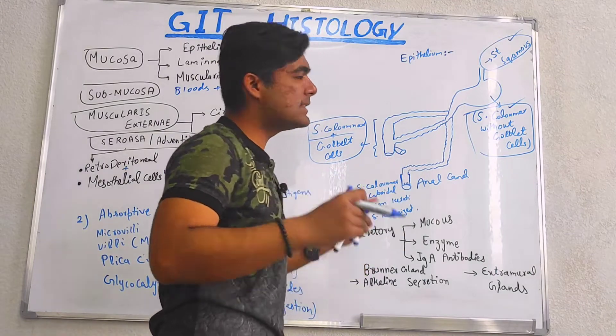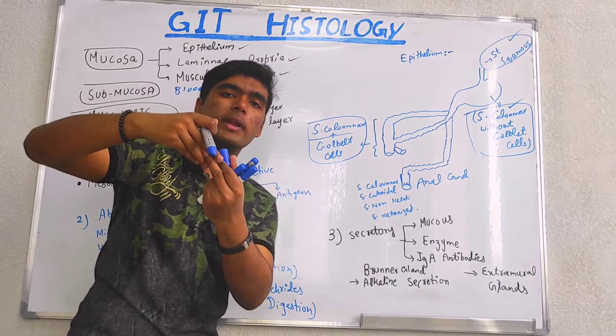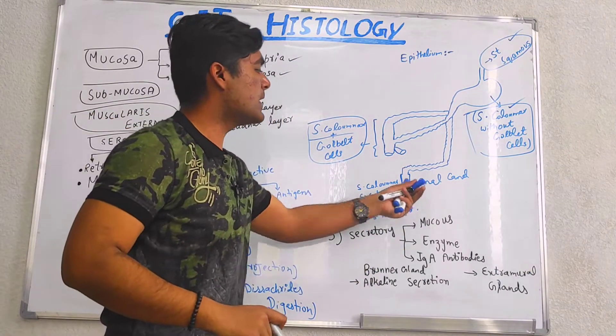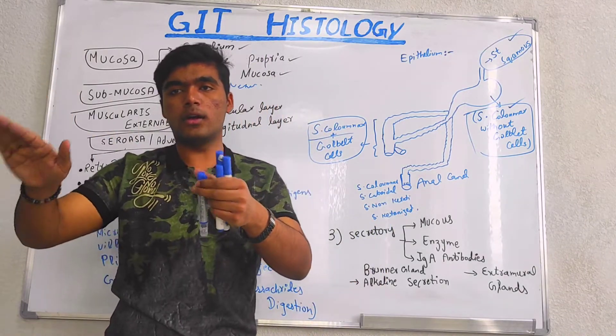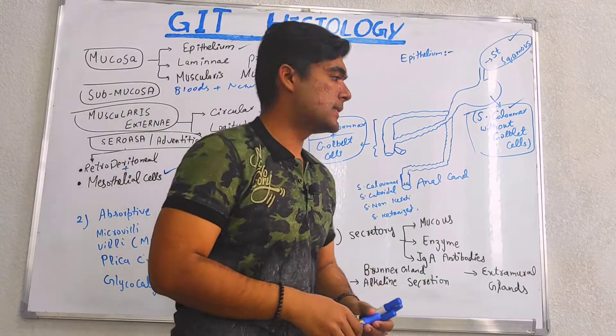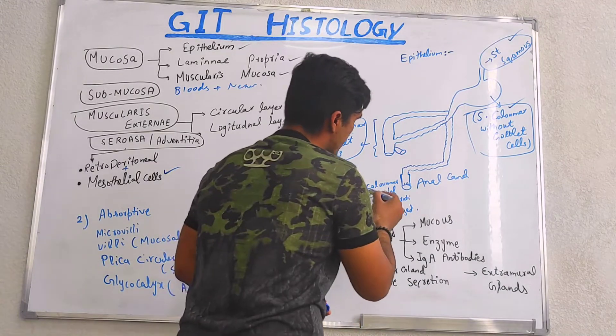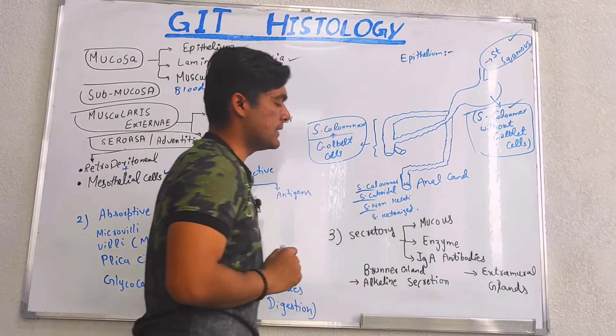In small and large intestine, it is stratified columnar but with goblet cells. And in case of anal canal, there is a slight change in that, meaning it varies from surfaces. We have stratified columnar, cuboidal, non-keratinized, and keratinized.